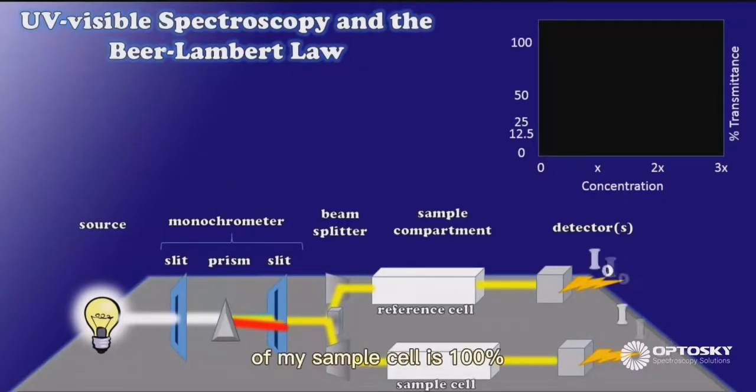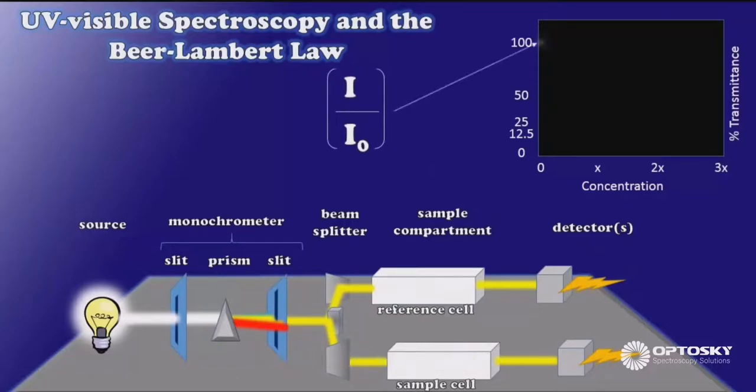I see that the transmittance of my sample cell is 100% that of the reference. So I'm going to plot that here at zero concentration, 100% transmittance.